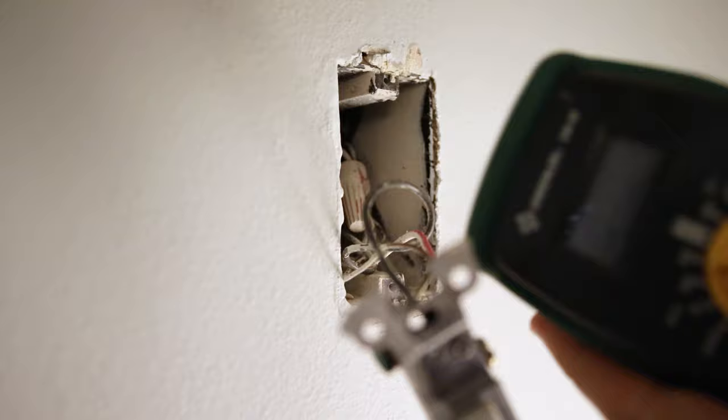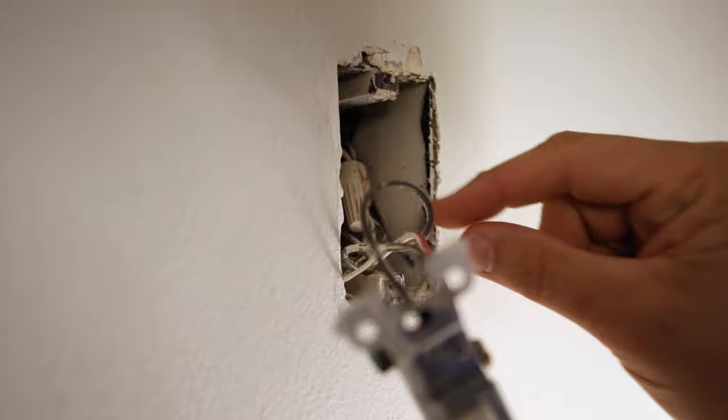First things first, I wanted to kill power to the light switch. Then I could take the trim plate off, open it up, and pull the light switch out. Before I do anything, I wanted to make sure I did kill the power to the box, and I test everything with a voltmeter to make sure everything is not live. Then I could pull all the wires out and begin my work.